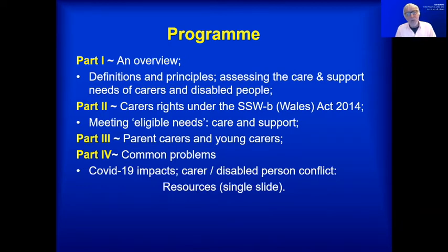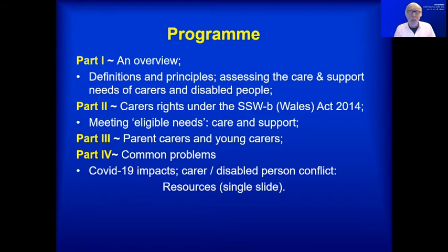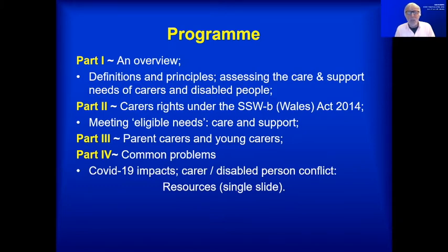Part three focuses on two specific caring roles: one by parents who have disabled children — parent carers — and the other of young people who are carrying out caring roles either for a disabled sibling or for a disabled parent — young carers. The fourth part looks at commonly occurring problems, in particular problems that are COVID-related during the current emergency, but also situations where there's conflict between a disabled person and a carer and how one could expect that to be resolved.